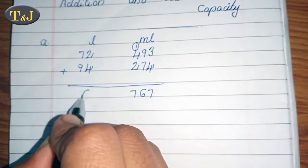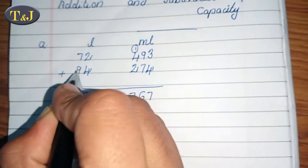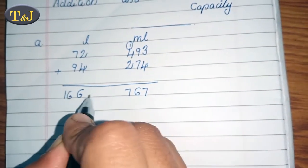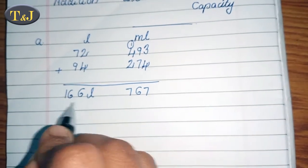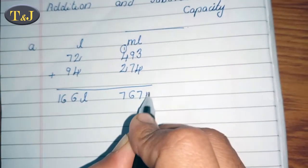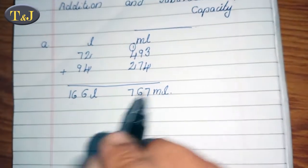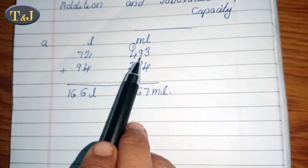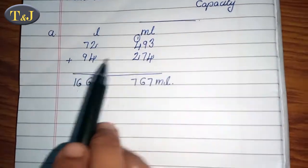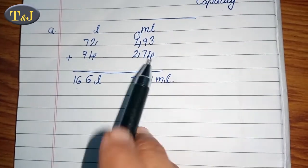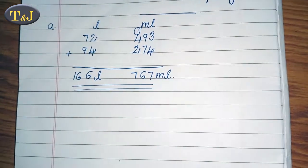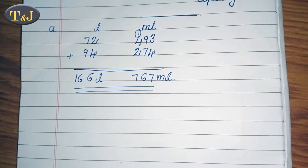In the place of liters, 72 plus 94: 2 plus 4 equals 6, then 9 plus 7 equals 16. Now we got the answer 166 liter 767 milliliter. So 72 liter 493 milliliter plus 94 liter 274 milliliter equals 166 liter 767 milliliter.